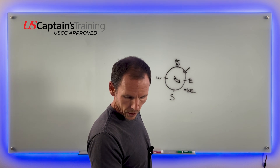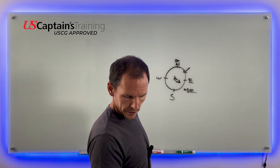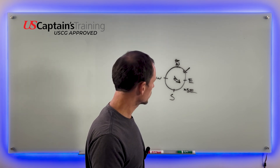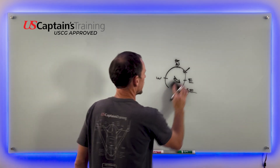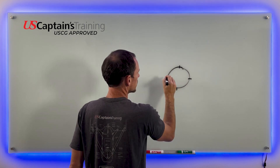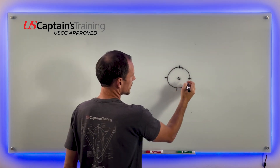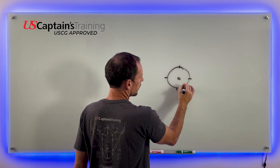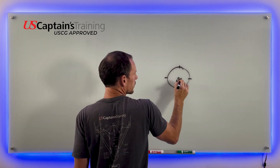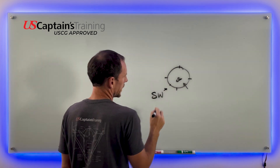Problem two: according to Buys Ballot's law, an observer in the northern hemisphere who experiences a southeast wind has the center of low pressure where? Draw the diagram — north, east, south, west, you're at the middle. The wind is coming from the southeast. Put your back to it and it's to the left — that's southwest. The center of the low is to the southwest.